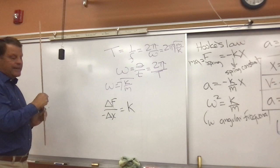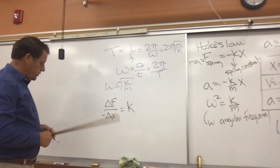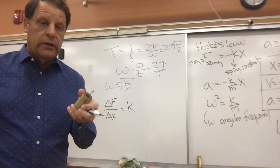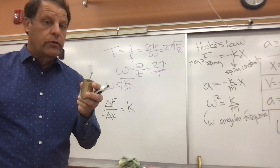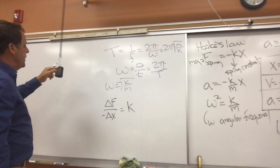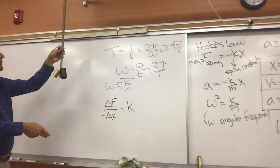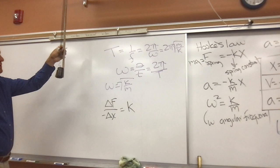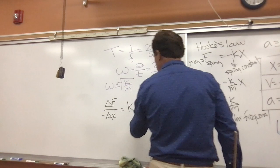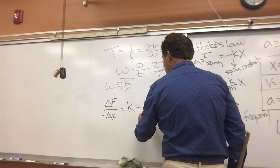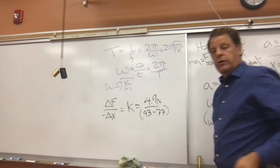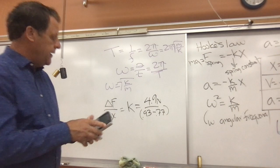We're going to take a reference here: the bottom of this spring is at 77 centimeters. We're going to add 500 grams — 0.5 kilograms — and when we multiply that by 9.8 we're going to get a change in force of 4.9 newtons. We put this on, check the distance, and that looks to be about 93 centimeters. So our change in force was 4.9 newtons, and our displacement is 0.93 minus 0.77 meters — that will give us the spring constant K.